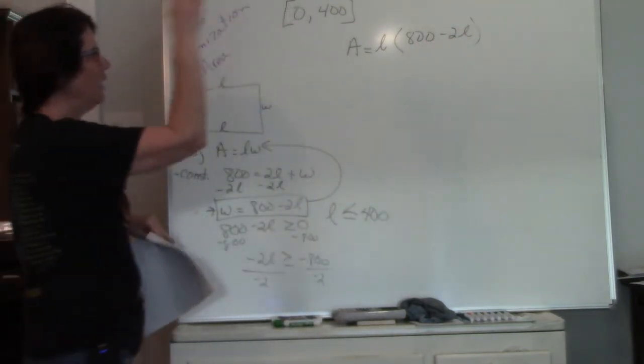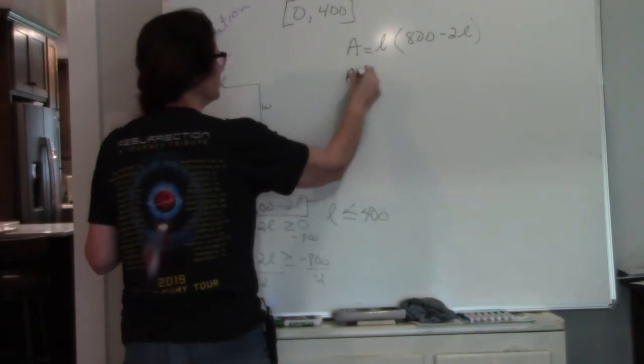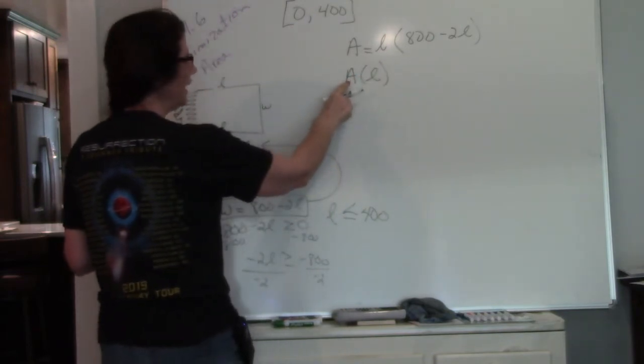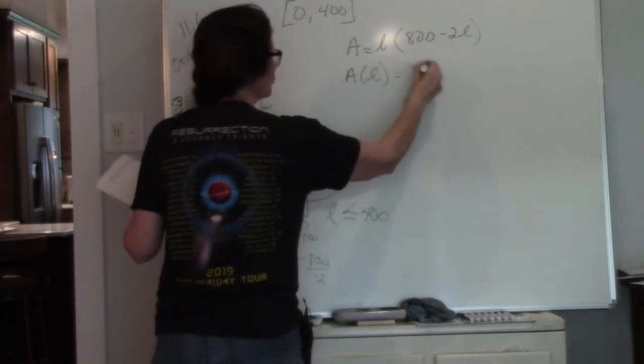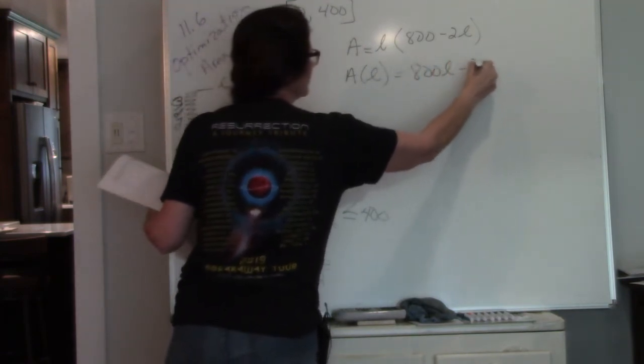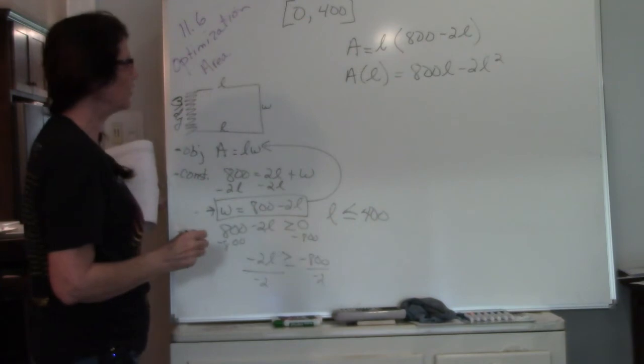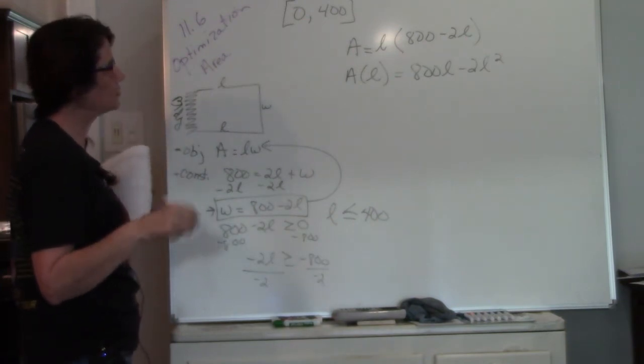Now I'm going to simplify this. My area in terms of length. All I have is length in here. So I have 800L minus 2L squared.